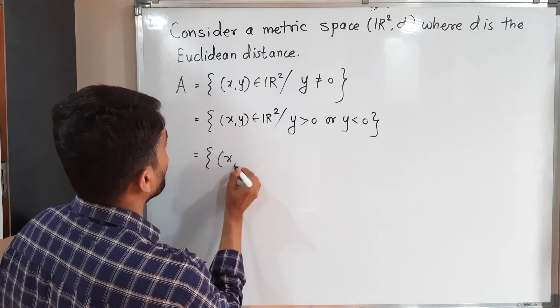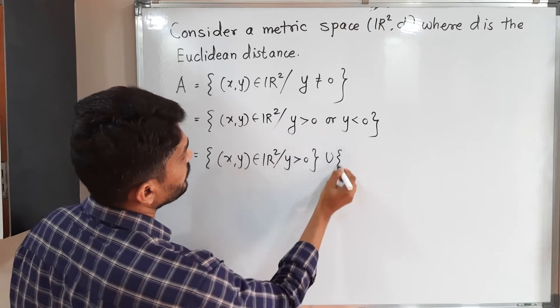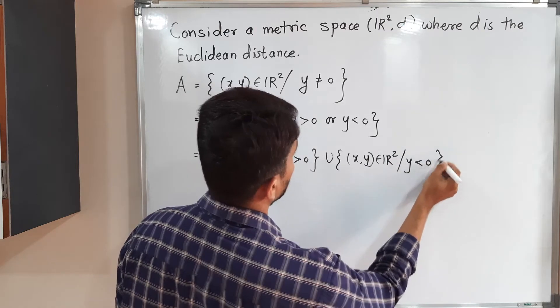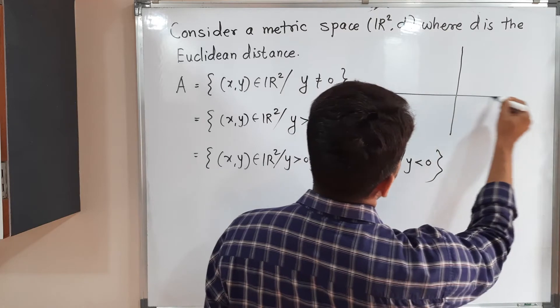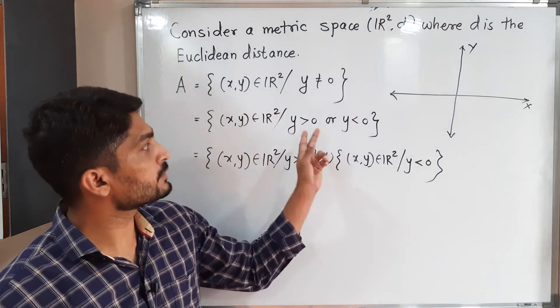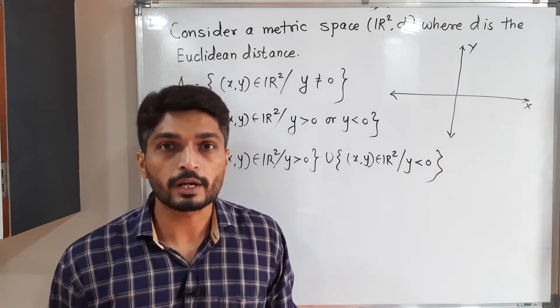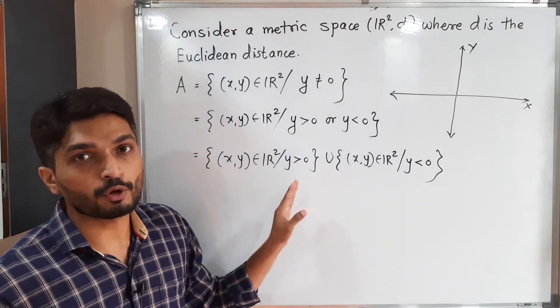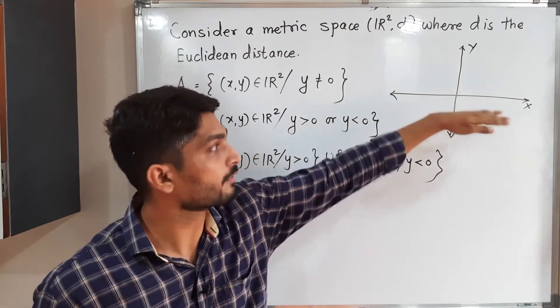Let us write that: {(x,y) ∈ R² : y > 0} union {(x,y) ∈ R² : y < 0}. I will draw the diagram so we can easily decide what we have here. This is x-axis and this one is y-axis. We have y ≠ 0. y = 0 is the equation of x-axis. y ≠ 0 means you can take any point in the plane other than points on the x-axis.